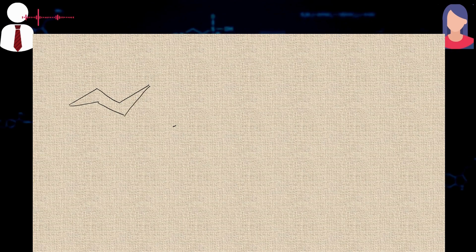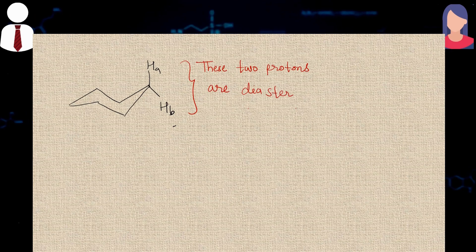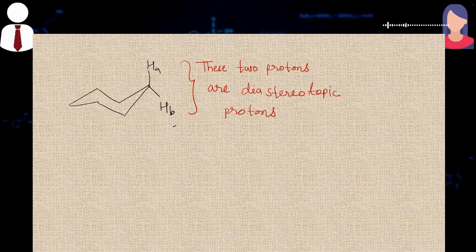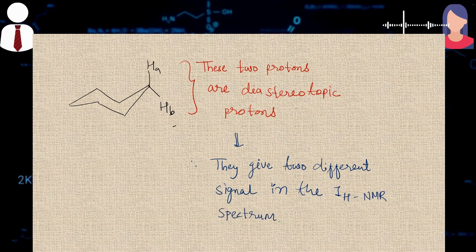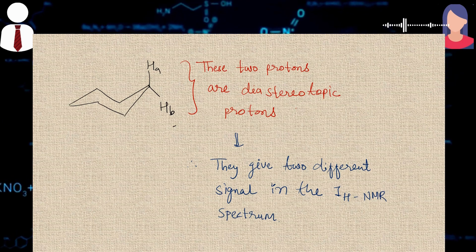Then he asked what is the type of these two different protons. So basically he was asking about the enantiotopic or diastereotopic protons. I replied that these two protons are giving two different signals, so they must be diastereotopic protons, because enantiotopic protons don't give two different signals in the NMR spectroscopy. He said okay, correct.